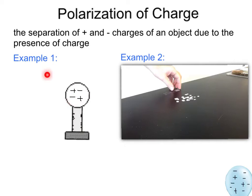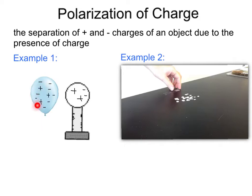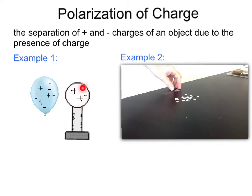But what happens if I bring a charged object near it? Here I brought a negative balloon near this metal sphere, and now you can see that the negative charges on the sphere have moved away from the negative charges in the balloon. We would now say that the metal sphere is polarized. Notice it's still neutral — it has two positives and two negatives — but these charges are separated. This side is slightly more positive and this side is slightly more negative.